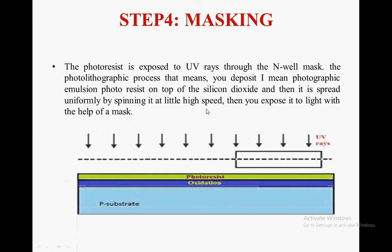Step 4 is masking. The photo resist is exposed to ultraviolet rays through an annual mask — this is the photolithographic process. The photo resist is deposited on top of the silicon dioxide, spread uniformly by spinning at a high speed, and then exposed to light with the help of a mask. Here is the mask showing where UV rays penetrate and where they do not.